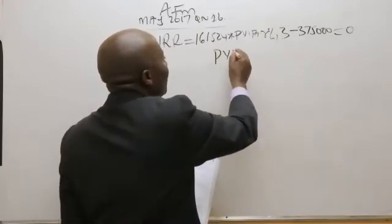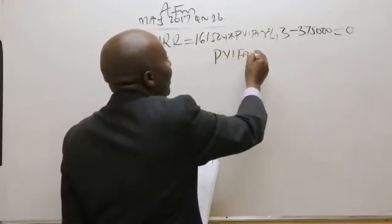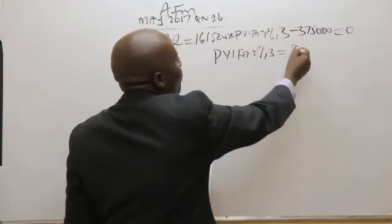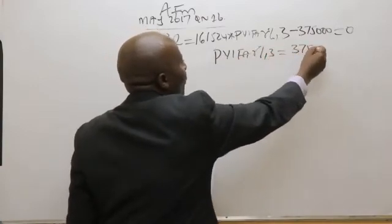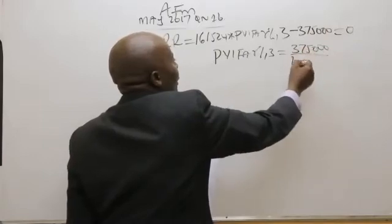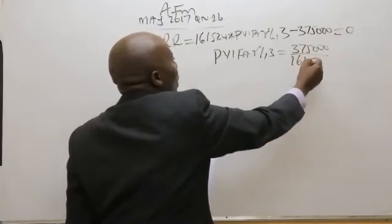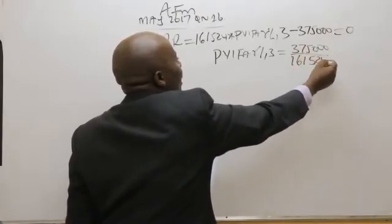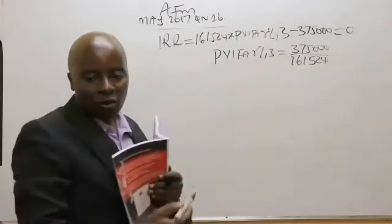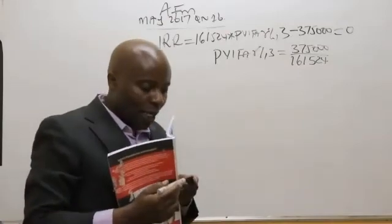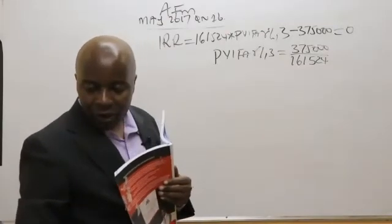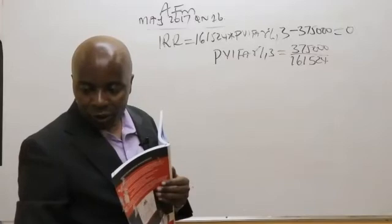If I do that, I will end up getting PVIFA for R percent over 3 years equals $375,000 divided by $161,524.